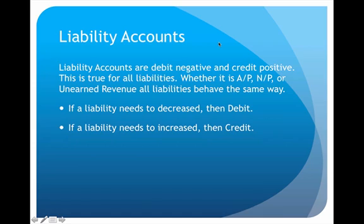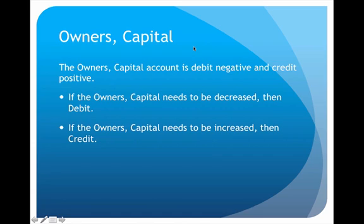The second category is liability accounts. These are different from assets, so they have a different behavior: for liabilities, debit is negative and credit is positive. If a liability needs to be decreased you would debit it, but if it needs to be increased you would credit it. It doesn't matter what liability it is — accounts payable, notes payable, unearned revenue — every liability follows that same pattern.